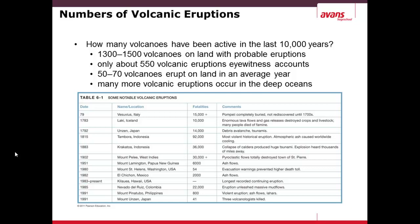Some notable volcanic eruptions are shown in the table here. A very old one is Vesuvius in the year 79, which killed approximately 15,000 people. Laki in Iceland in 1783 caused 10,000 deaths. Unzen in Japan caused not only deaths but also a tsunami, killing 14,000 people. Tambora in 1815 in Indonesia had one of the highest death counts. And possibly the largest volcanic eruption in recorded history was Krakatoa in Indonesia, which caused 36,000 people to lose their lives — and was an explosion heard thousands of miles away.